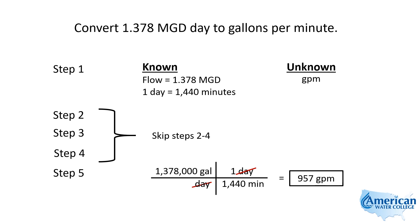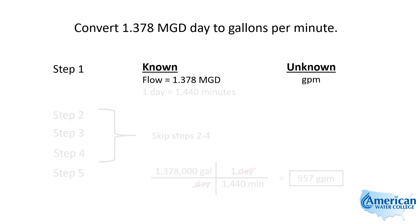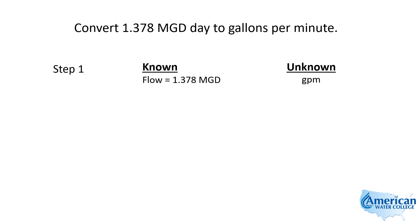Let me show you another way to solve this with a different equivalent that's worth remembering. We have the same information, same flow, and we're looking for gallons per minute, but instead of 1440, I'm going to use the equivalent that says 1 MGD is equivalent to 694.4 gallons per minute. This is something that's really worth remembering to convert between gallons per minute and MGD, and the other way as well.